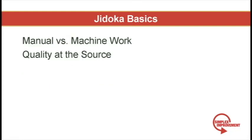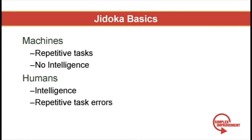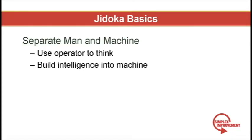Jidoka implies two things. First is the clear separation of those tasks that should be performed by a man versus those that should be performed by a machine. Machines are great at performing repetitive tasks but lack human intelligence. In contrast, humans are great at using their brains but often grow bored or produce errors when given repetitive tasks. With each step in your manufacturing process you should ask: does this person really need to be on the machine for this process to work properly? Are we just wasting a valuable thinker by making him sit here and wait and watch the machine? Focus should be put on building intelligence into machines so you can free up your most valuable resources — your operators.